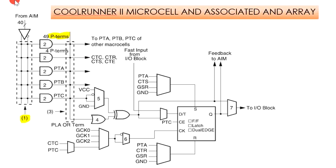Box 2 represents the AND array and it can have up to 40 variables. Box 3 represents the OR array, which selects the AND gates for each macro cell. OR gate 4, present in a specific macro cell, can have any subset of P terms as inputs.